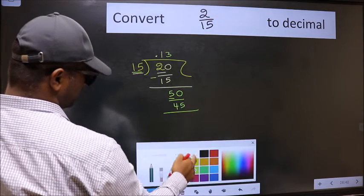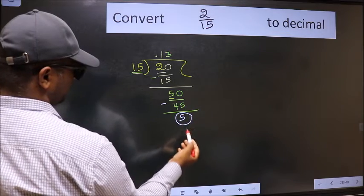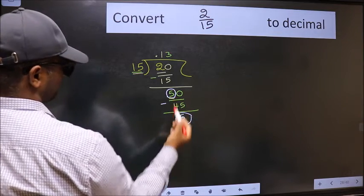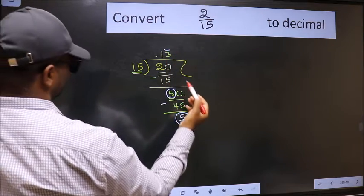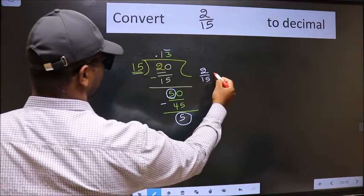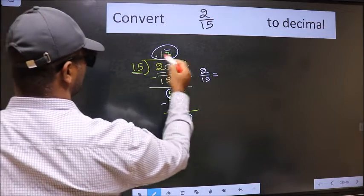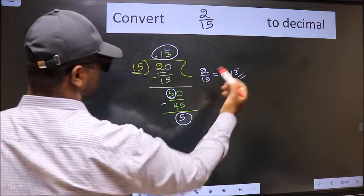Now we should subtract. We got 5 again. Earlier also we got 5. That means we get bar on this number. Therefore, our decimal of 2 by 15 is this one: 0.13 bar. This is our answer.